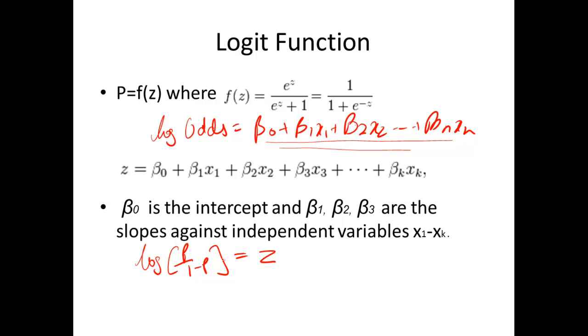Now if log of p over 1 minus p is equal to my regression equation, let's solve for p. If I take away the log from this side, this becomes p over 1 minus p is equal to e raise to power z. I multiply on both sides by 1 minus p, therefore p becomes equal to 1 minus p into e raise to power z.